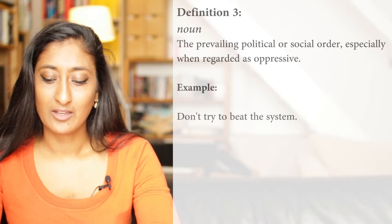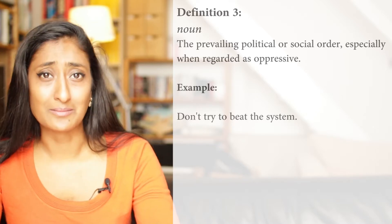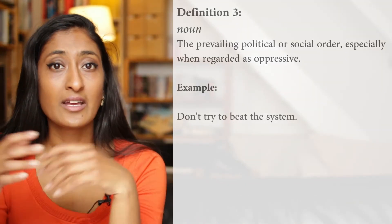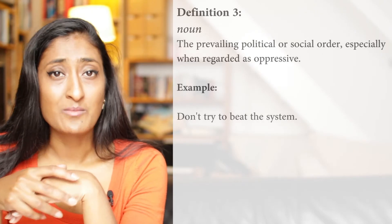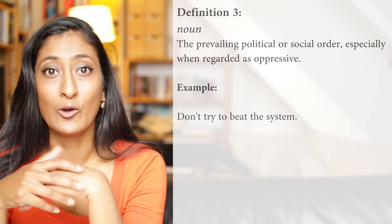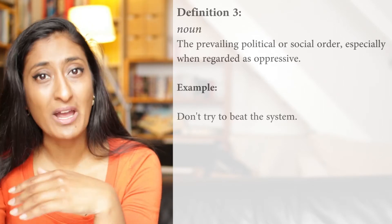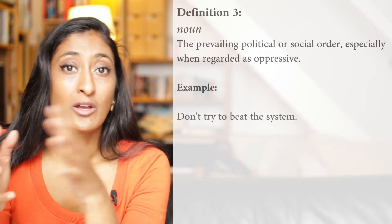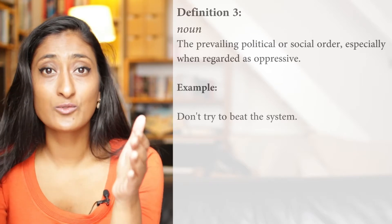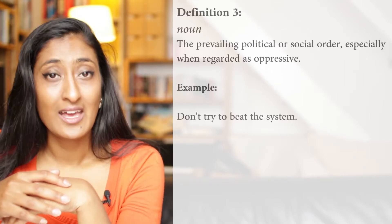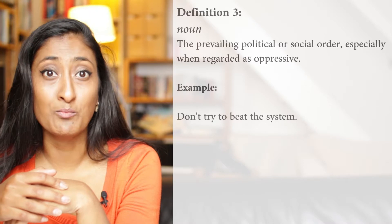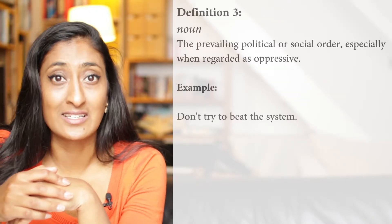Here's an example sentence: don't try and beat the system. Now this doesn't have to be political — it can be in any area of life. Take sports for instance. Sometimes you hear on the news how some athletes take drugs so that they can run faster or perform better, and this might be considered one of the ways they try to beat the system. There are rules in place to make sure everything is fair, and some people try to get around that through means that are not always considered legal or fair.